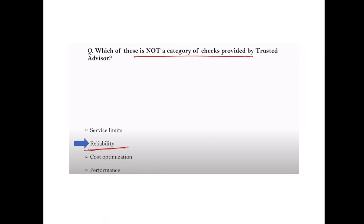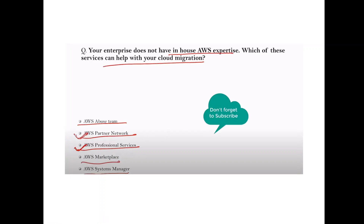Question: Which is not a category of checks provided by Trusted Advisor? Trusted Advisor includes service limits, cost optimization, and performance as categories. The answer here is 'reliability' — it is not a Trusted Advisor category.